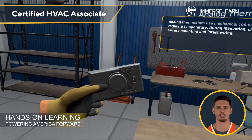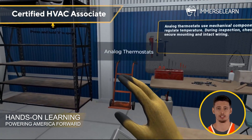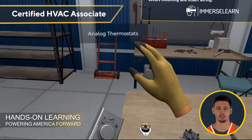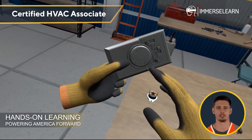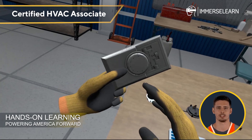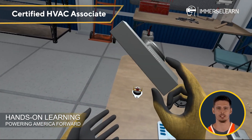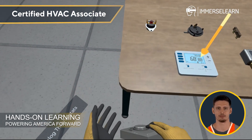There are two main types of thermostats: analog and digital. Analog thermostats use mechanical components to regulate temperature. During inspection, you'll want to check for clean, secure mounting and ensure the wiring is intact.